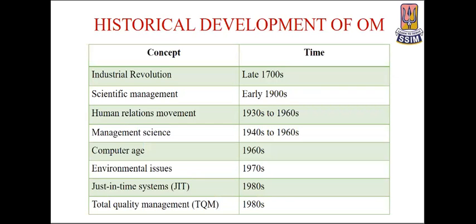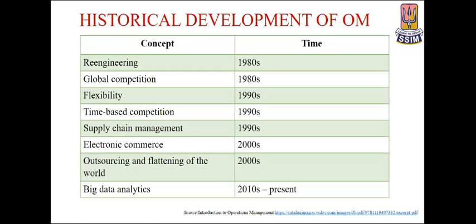The historical development of operations management spans different timelines: the Industrial Revolution in the late 1700s, Scientific Management in the early 1900s, Human Relations Movement, Management Science, the Computer Age, Environmental Issues, Total Quality Management, Re-engineering in the 1980s, Global Competition, Flexibility, Time-Based Competition, Supply Chain Management in the 1990s, Electronic Commerce and outsourcing in the 2000s, and Big Data Analytics from 2010 to the present.